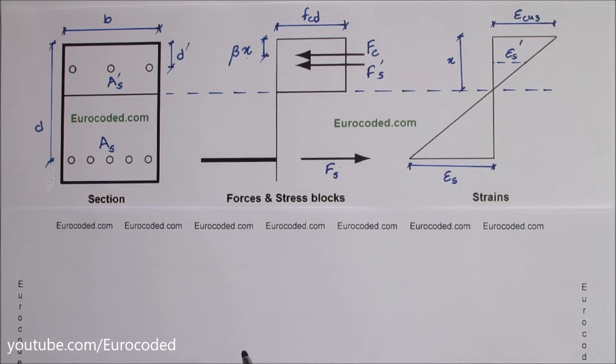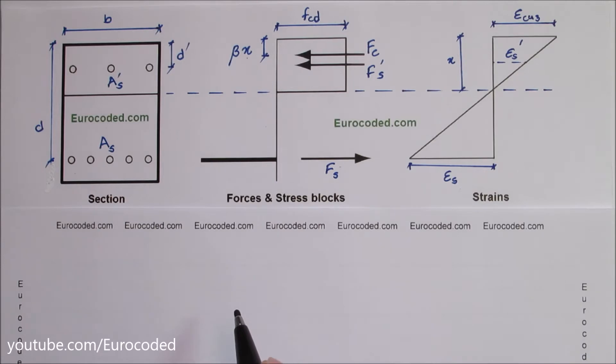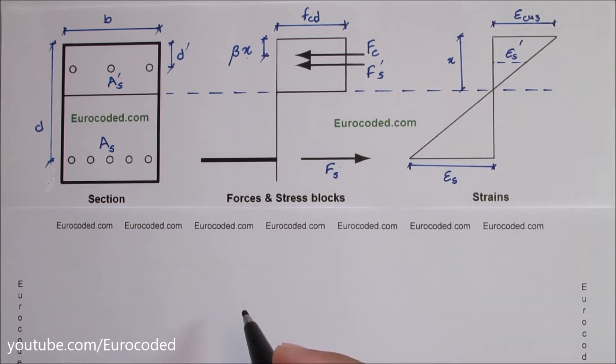Welcome back to Eurocoded. Today I'm going to show you how to calculate the bending resistance of a doubly reinforced concrete beam in accordance with Eurocode 2.